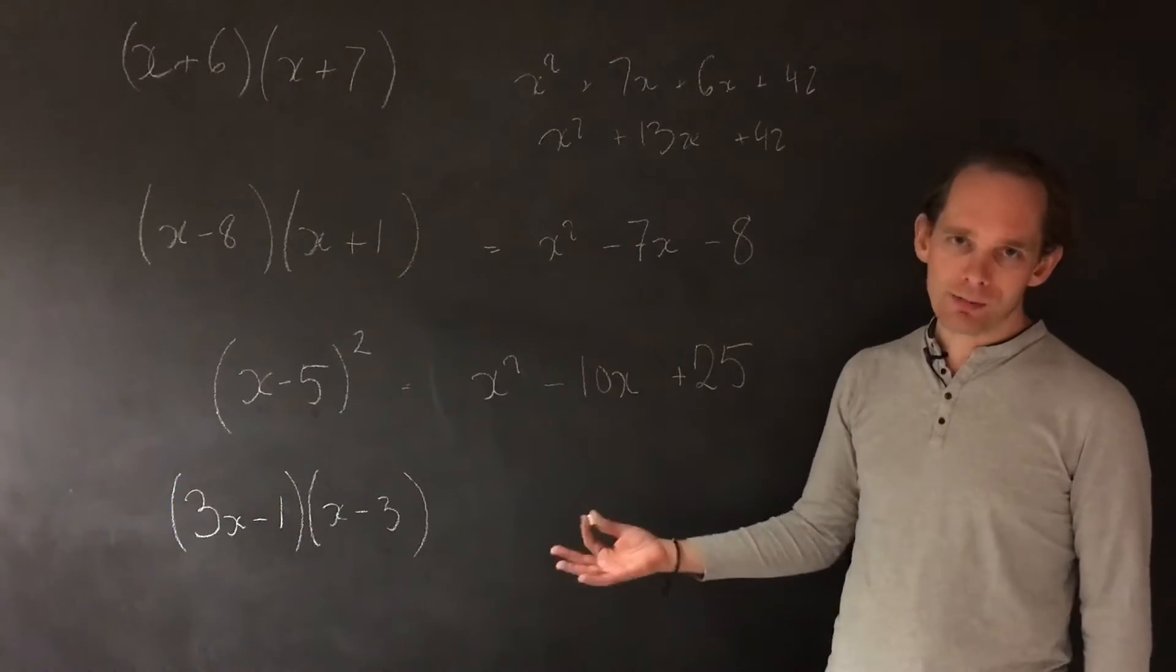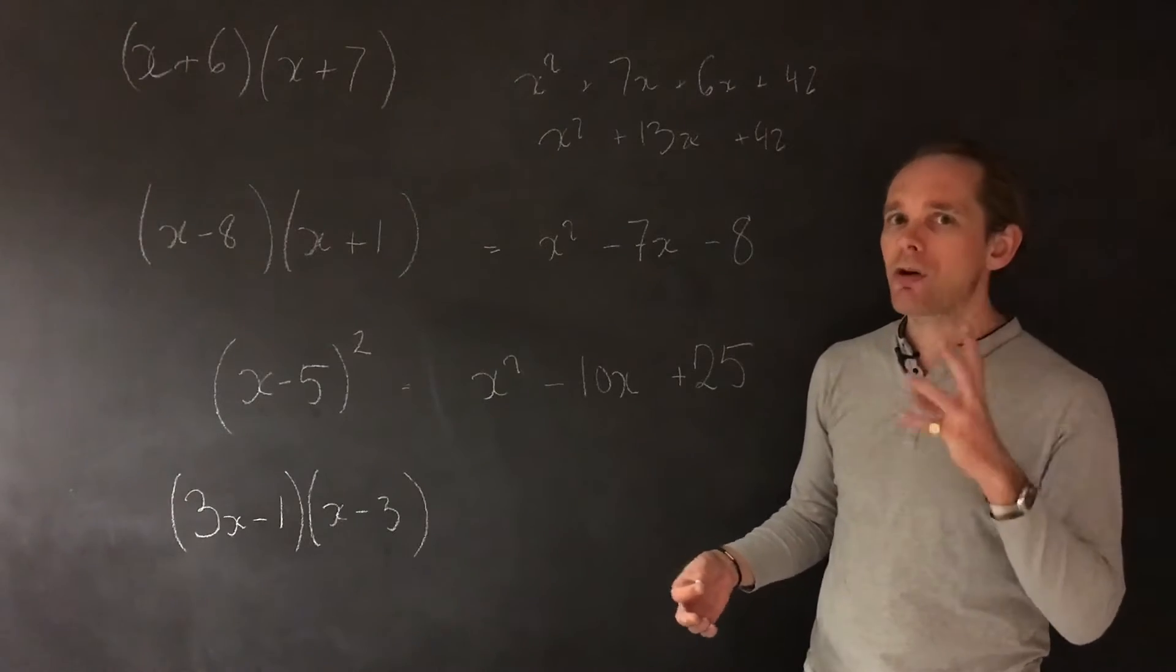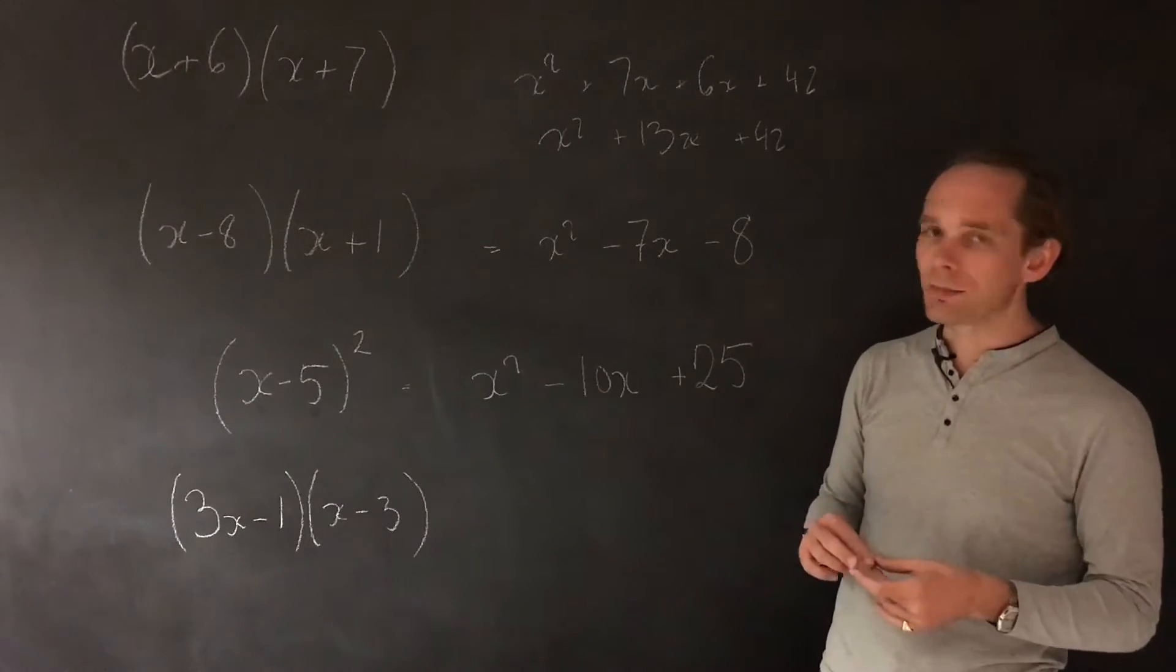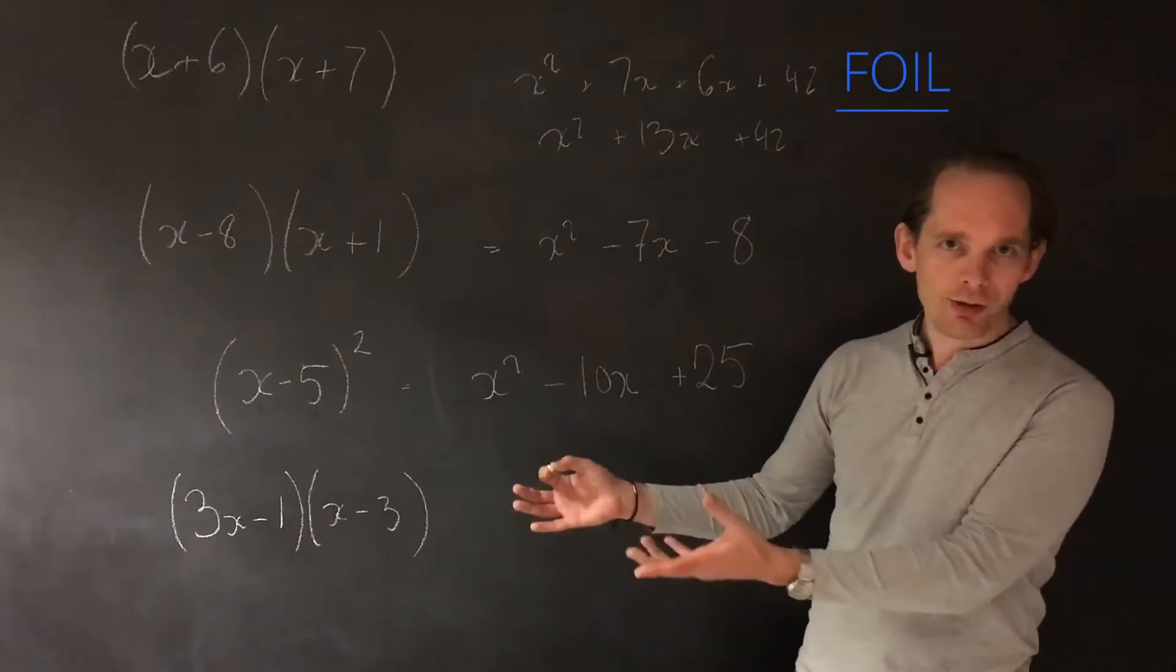You just have to proceed with a bit of care, but the principle is exactly the same. But you do have a little bit more to hold in your head if you're trying to do this on the task line or do it in a multiple choice like this. So first of all, let's just do it the FOIL way.